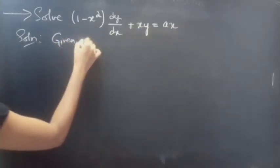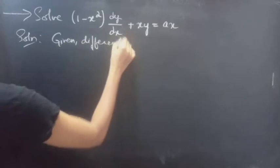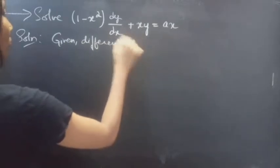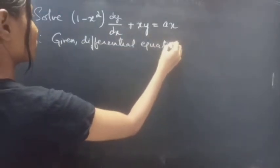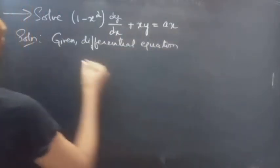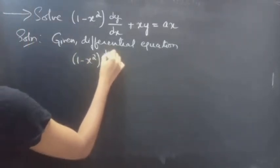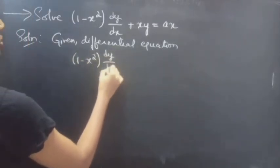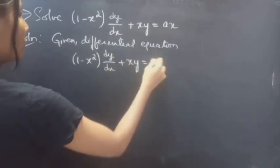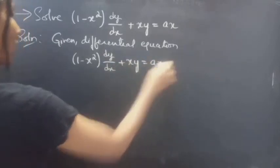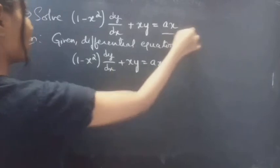Given differential equation: (1 minus x squared) into dy/dx plus x into y equals to ax. Consider the given equation as equation 1.